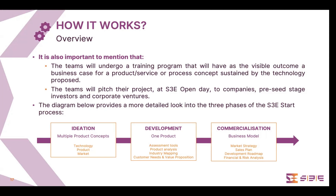In the second phase, using a tool that will allow you — with an educated guess — to decide among multiple product concepts, you select one product. For that product, through a set of tools we provide, you assess whether there is any fatal flaw that would prevent you from going to market with that chosen product. If you find a fatal flaw, you can come back and pick another product concept and do the exercise all over again. That's why it's important to devise multiple product concepts in the first phase.